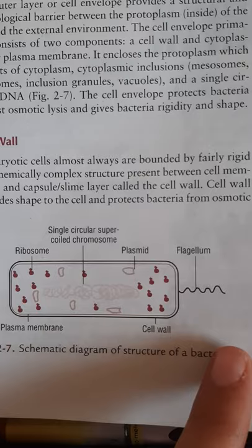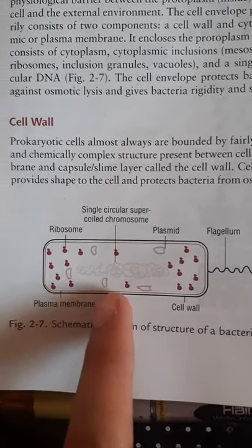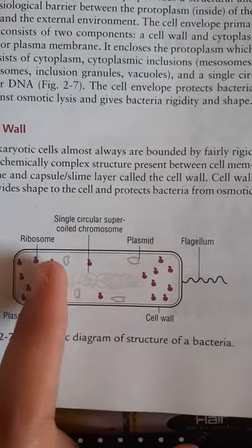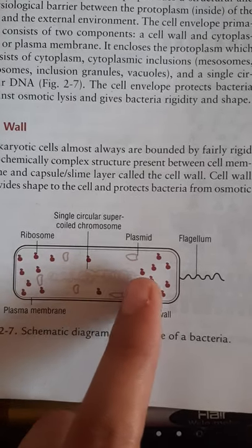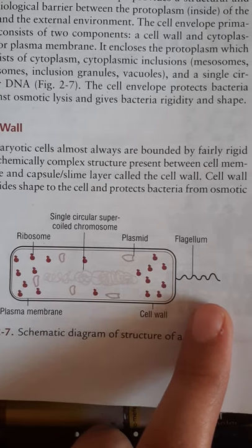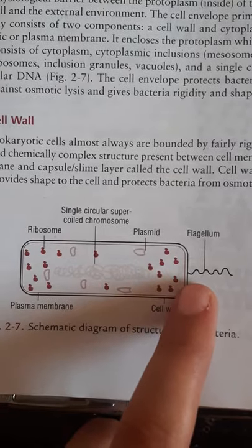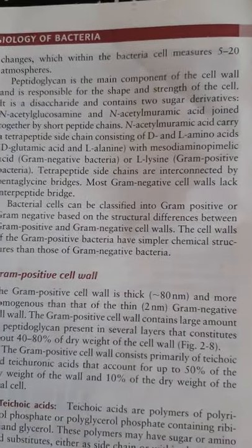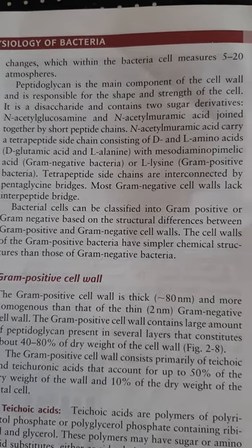In the bacterial cell structure, there is a cell wall, plasma membrane — together called the cell envelope — ribosomes, a single supercoiled chromosome, and flagellum used for movement. The main component of cell walls is called peptidoglycan, which is responsible for shape and strength.